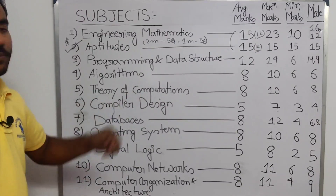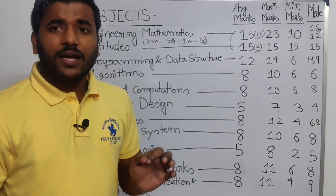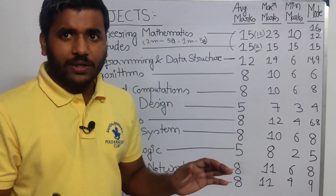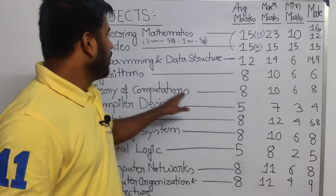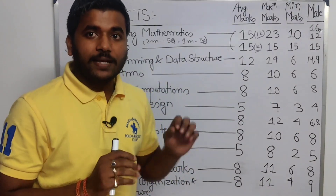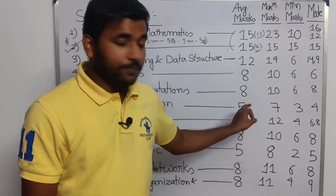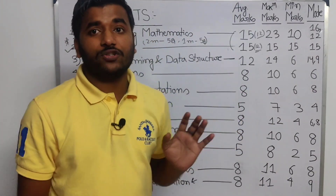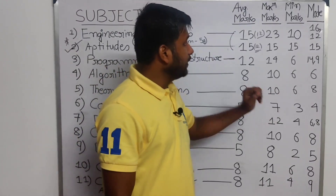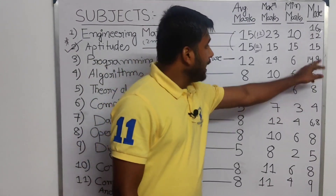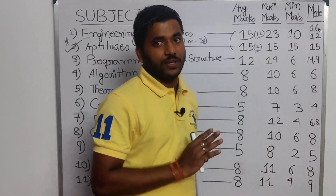The next subject is Theory of Computation. It's an easy subject — you don't need to memorize much; you just need to practice, similar to Maths. The average marks is 8, and you can score 6 marks easily if you study well. Maximum marks asked is around 10, minimum is 6, and the mode — most frequent value — is 8 marks from TOC.